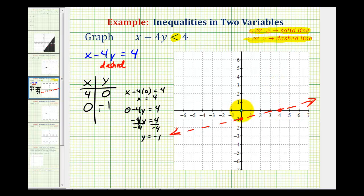So we'll test this point here and if it satisfies the inequality, we'll shade the same side that we're on. And if it does not satisfy the inequality, we'll shade the other side.